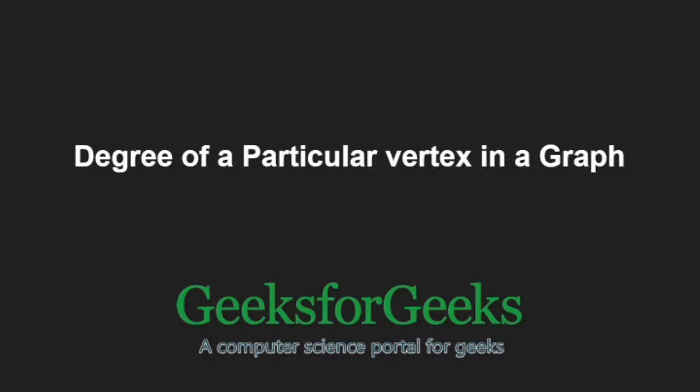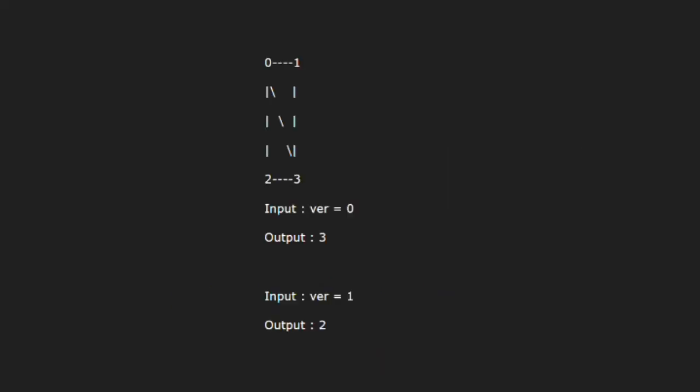First, let us take an example. In this graph, degree of vertex 0 is 3 and for vertex 1 it is 2.